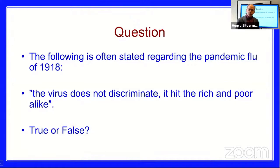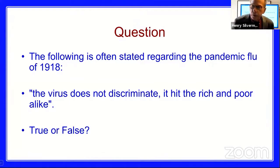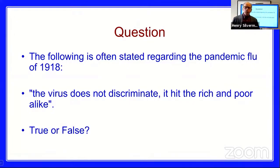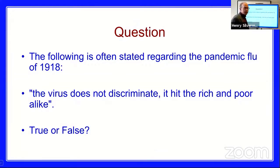So, 62% said true and 38% said false — almost even, but most people are saying that the 1918 pandemic hit the rich and poor alike.